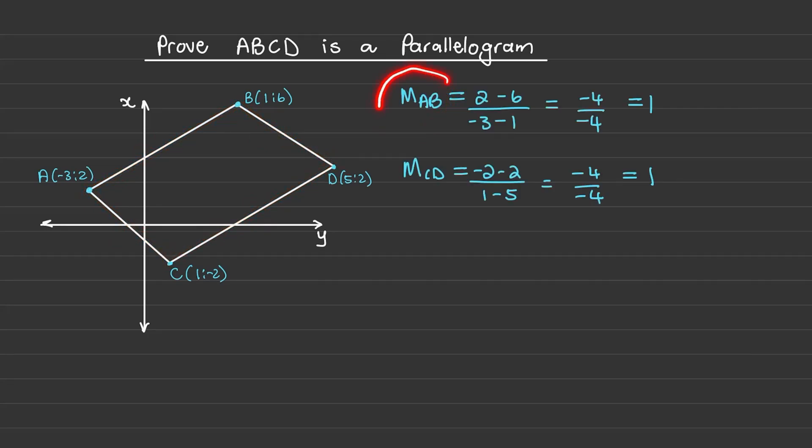First I'll find the gradient of line AB, which is the difference of y's over the difference of x's, and the gradient of line AB is equal to 1. Next I found the gradient of line CD using the gradient formula and I found that that gradient is also equal to 1.